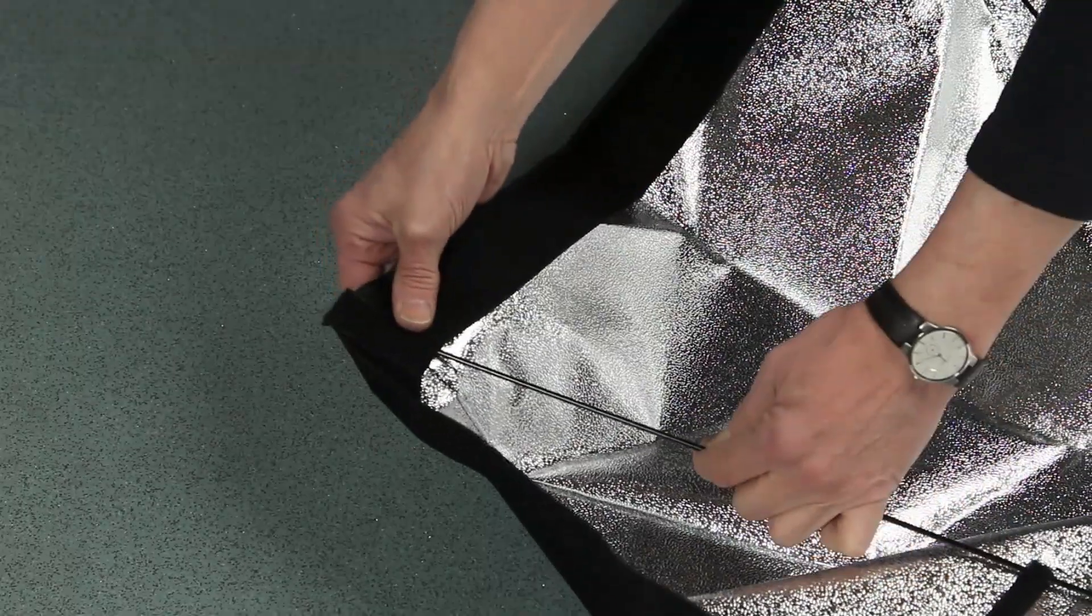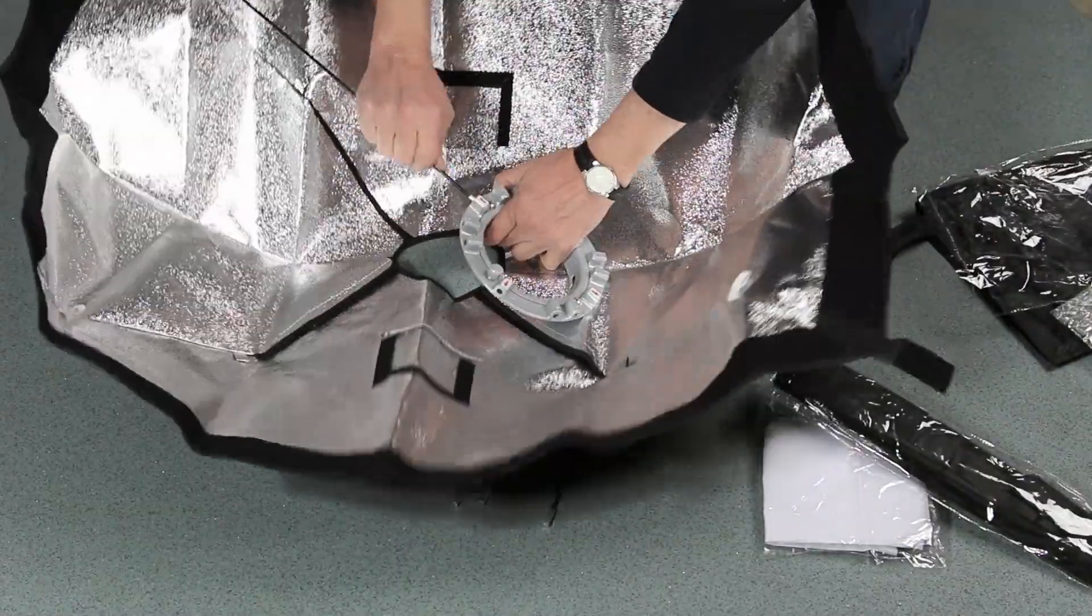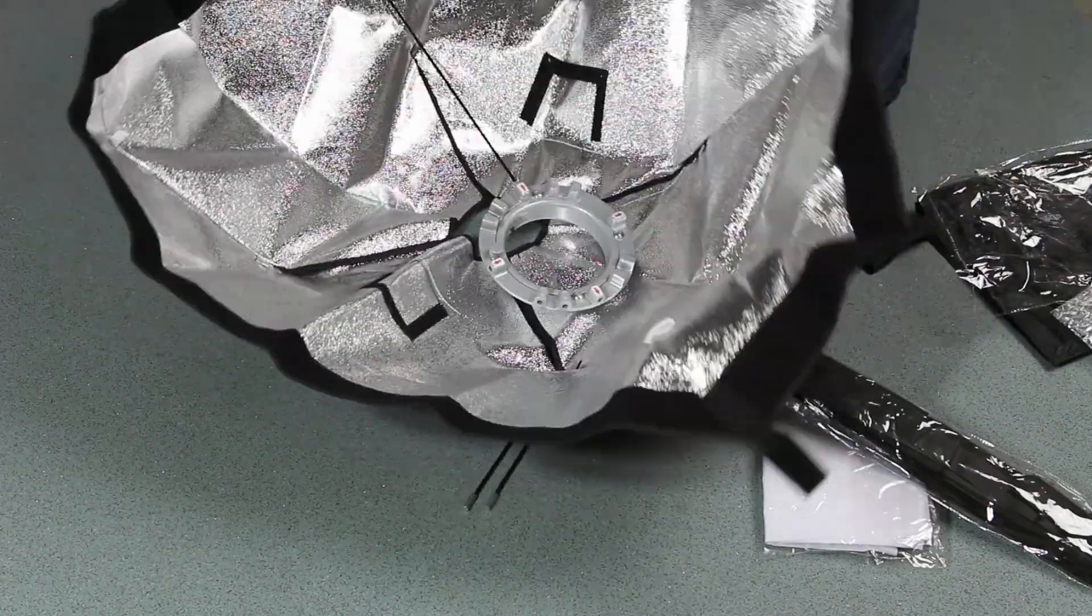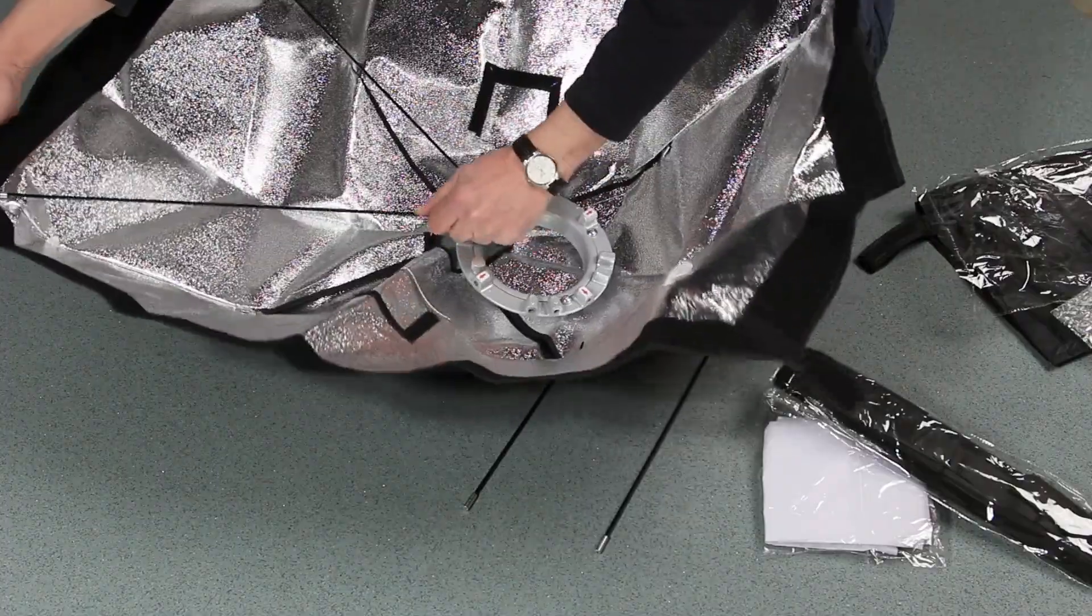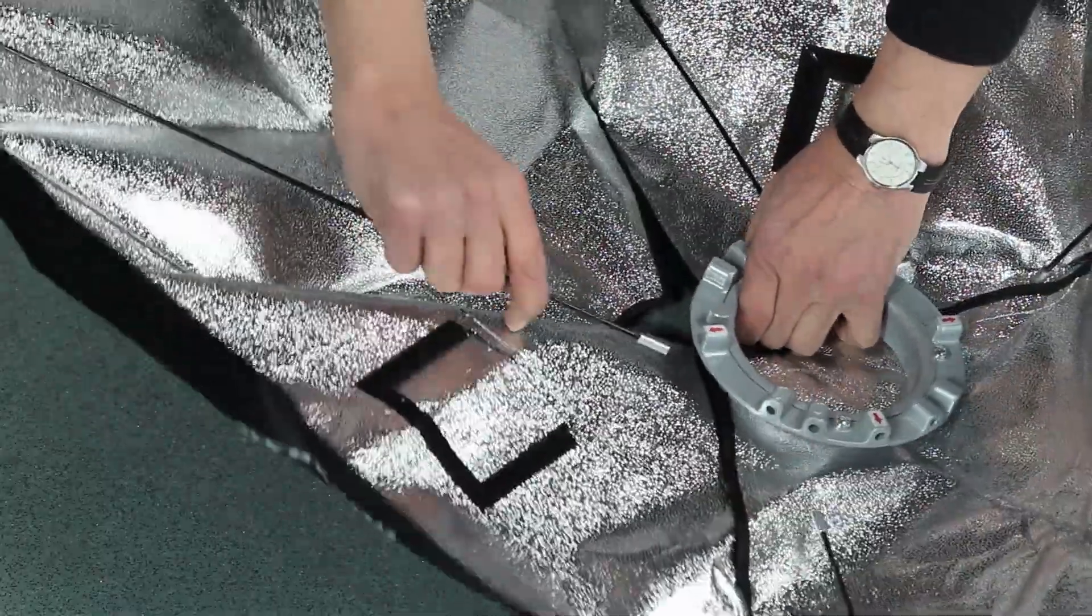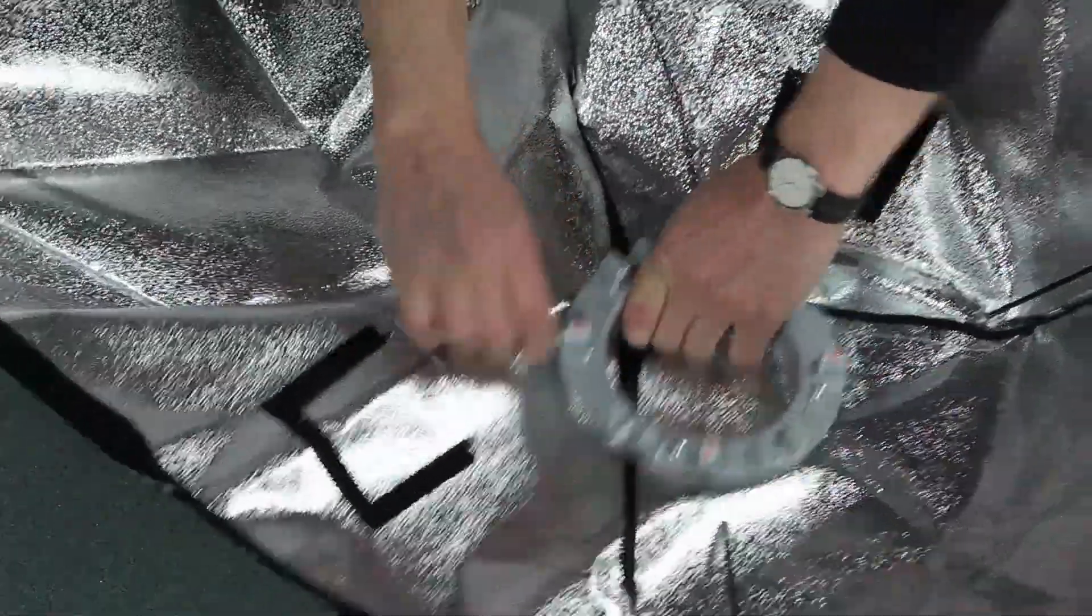Put the speed ring in the center and put the rod into the pocket, slip it up, and then put the other end of the rod into the speed ring. You need to do this with the second pocket. On the speed ring you see there's arrows - you fix this into the speed ring.